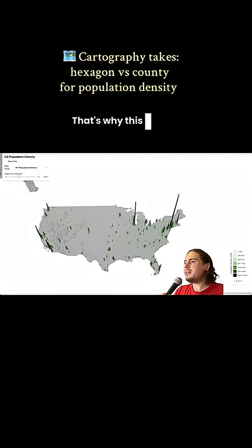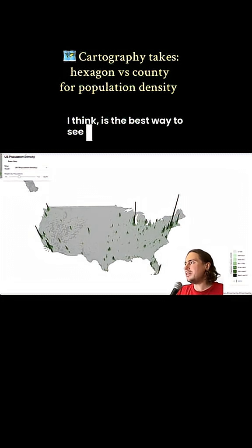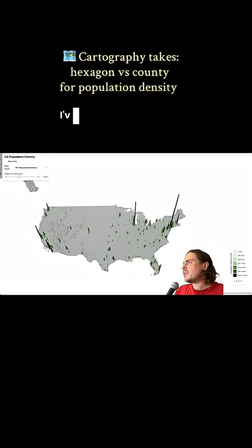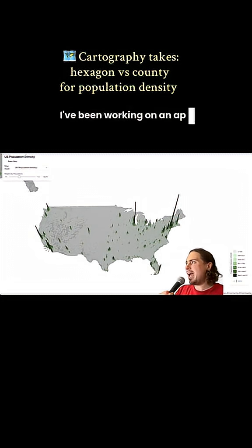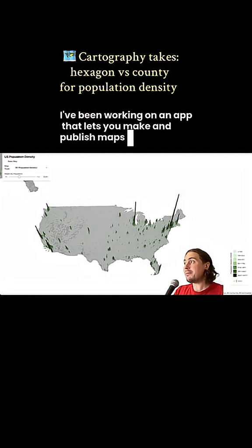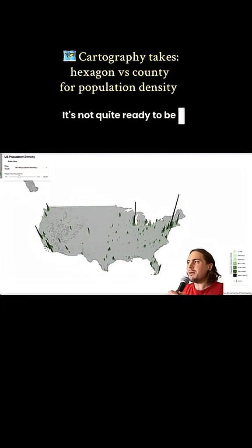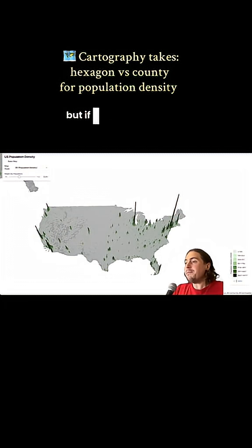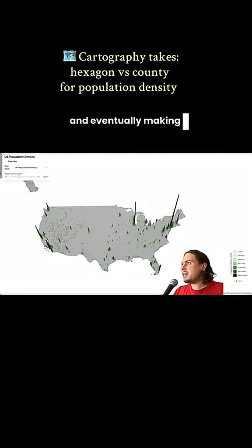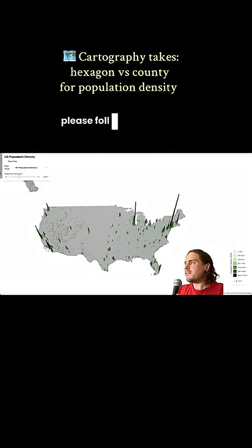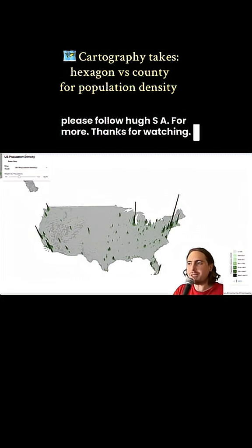That's why this map of hexagons, I think, is the best way to see population density. For the last few years, I've been working on an app that lets you make and publish maps like this. It's not quite ready to be deployed to the public just yet, but if you're interested in interacting with these maps and eventually making your own, please follow for more. Thanks for watching.